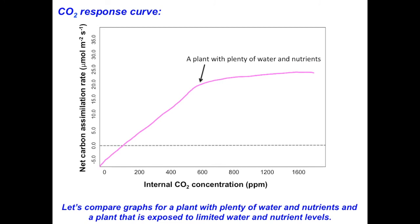For the stressed plant, I would expect the linear portion to be shorter with a less steep slope, meaning its carboxylation efficiency is lower. It is even more limited by CO2 and more saturated by RuBP compared to the happy plant. The curve would also taper off much earlier in terms of CO2 values, with a much lower maximum photosynthetic rate and overall net carbon assimilation rate. This allows us to make great comparisons of what biochemically limits different species or plants exposed to different environmental treatments.